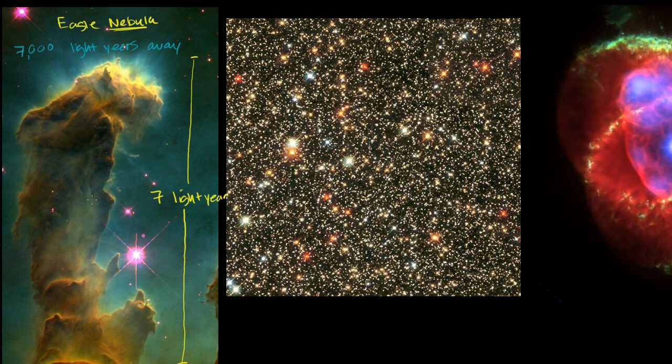There was another supernova that we think might have blown away a lot of this dust, and we won't be able to see the effects for another 1,000 years. But this is a pretty amazing photograph, especially when you think that this structure is 7 light years tall. This is really just part of the Eagle Nebula, one of the pillars of creation.